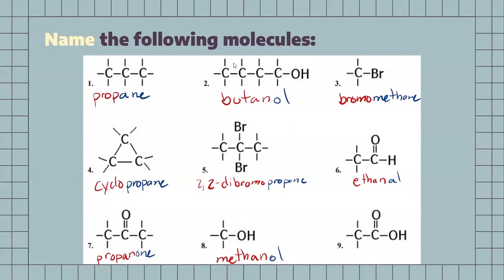Our next one, we have two carbons, so we know it's going to be a type of ethane. But, because of our carboxylic acid group, this is going to be called ethanoic acid. Hopefully, the different colors help you see how we are adding those endings, so you can get more comfortable making those replacements yourself.